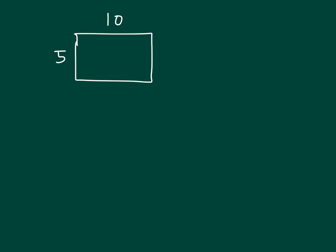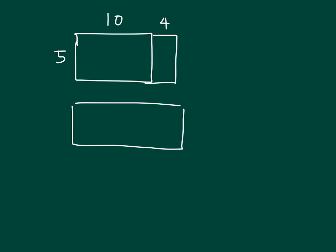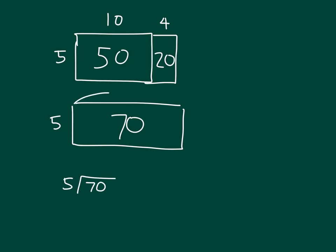Let me show you one last example. We still have our area model, and we have 5 here, 10 here, and then 4 here. I'm going to draw a duplicate of it underneath. Let's fill it in — what are we dividing? Well, 5 times 10 is 50, and 5 times 4 is 20. So we put it all together — that's 70. And what are we dividing by? That's 5. So it's really 70 divided by 5, and the answer is 10 with 4 more, which is 14.